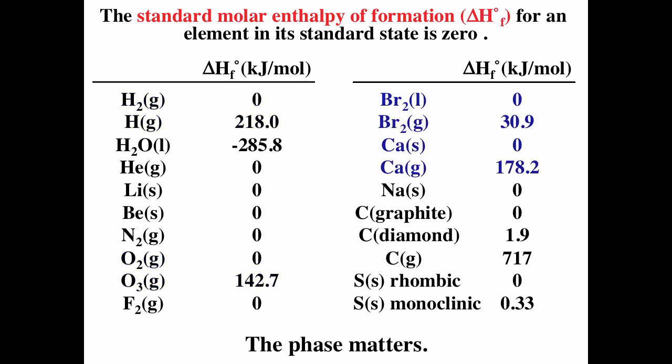Phase matters. Bromine is one of the few elements that is stable in liquid form, so Br2 liquid is the element in standard state, while Br2 gas is not. Calcium solid is the element in standard state; calcium gas is not.